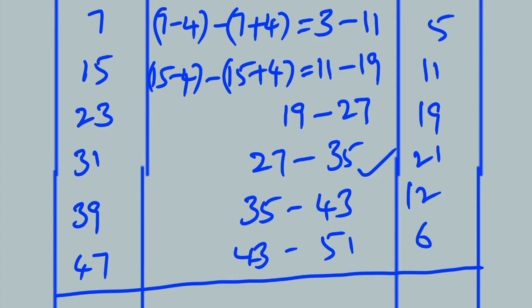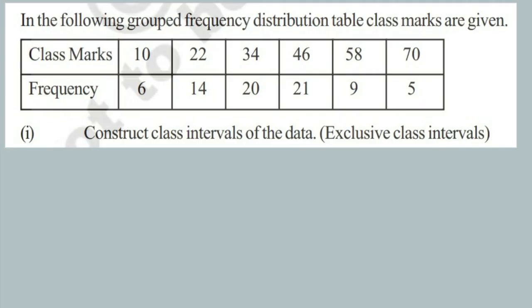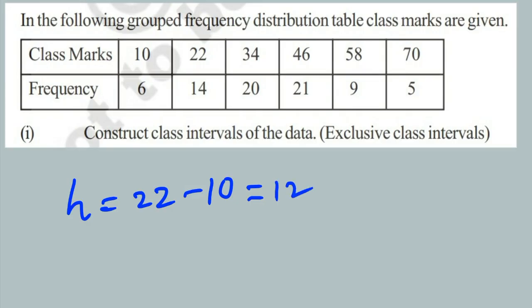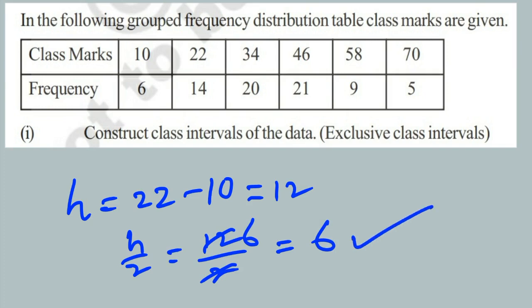Now let's go to the next problem. Observe this table — in the following grouped frequency distribution table, class marks are given, and the question asks us to construct exclusive class intervals. First we find h: h equals 22 minus 10, which equals 12. Then h by 2 equals 12 by 2, which equals 6. Using this 6, we can easily find the class intervals.